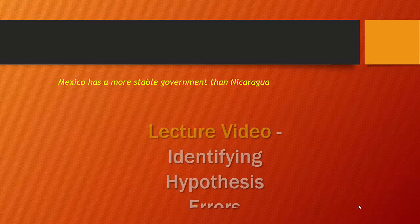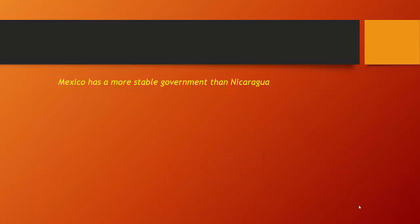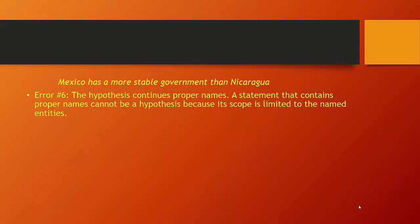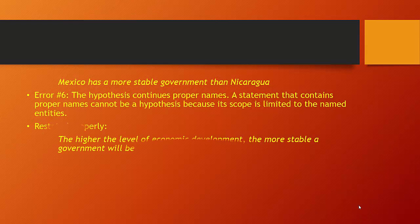Here's a new example: 'Mexico has a more stable government than Nicaragua.' If you said error six — that it contains proper names — you are correct. Because it has proper names, it limits our ability to generalize, which is a critical function of the scientific process. You have to ask yourself what it is about Mexico and Nicaragua that contributes to differing levels of stability. If you can understand the underlying construct and operationalize it, you can test it. For example, they may have different levels of economic development, giving you a hypothesis like: the higher the level of economic development, the more stable a government will be.